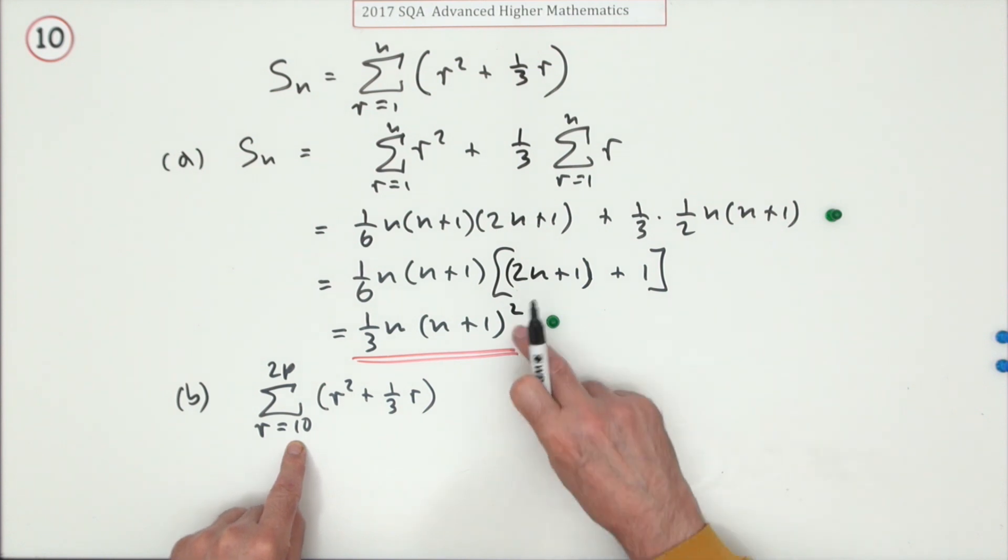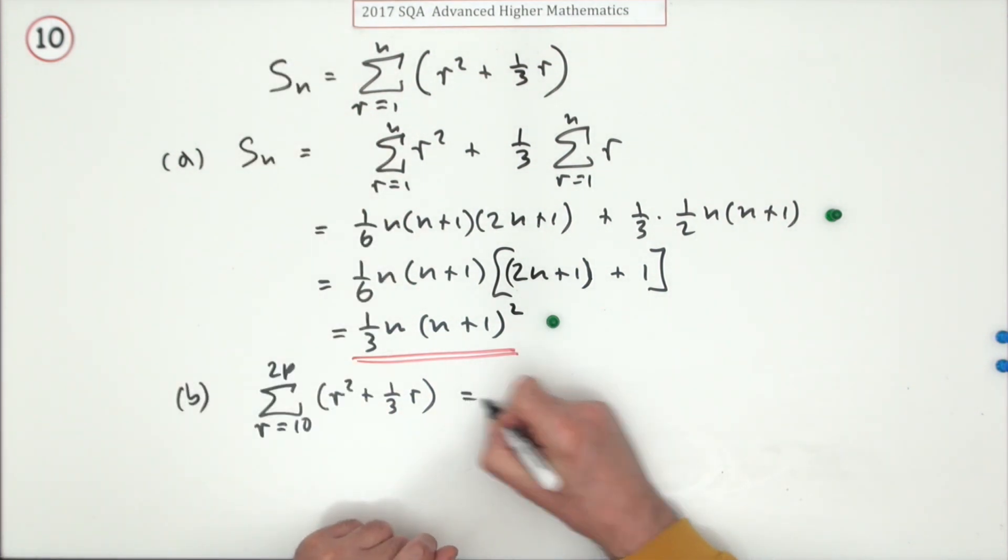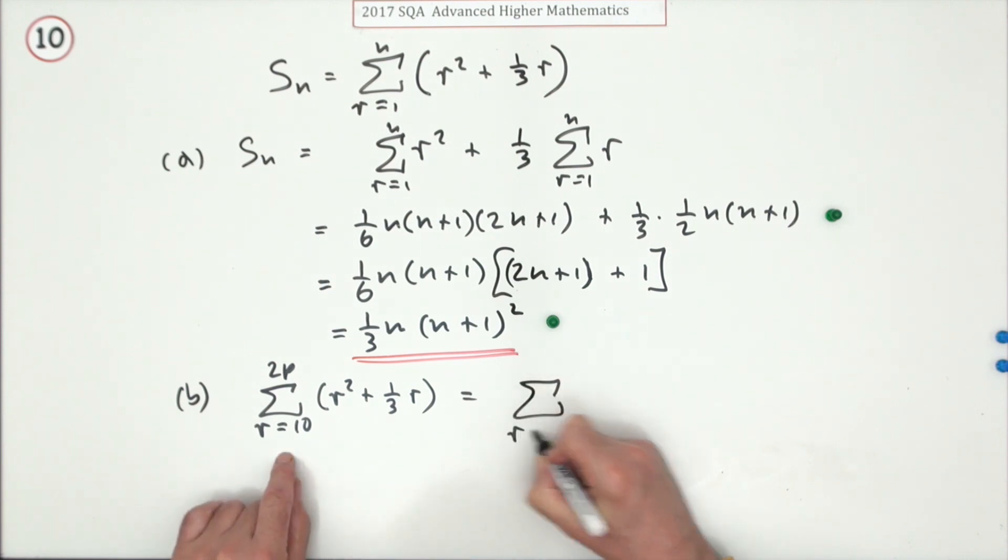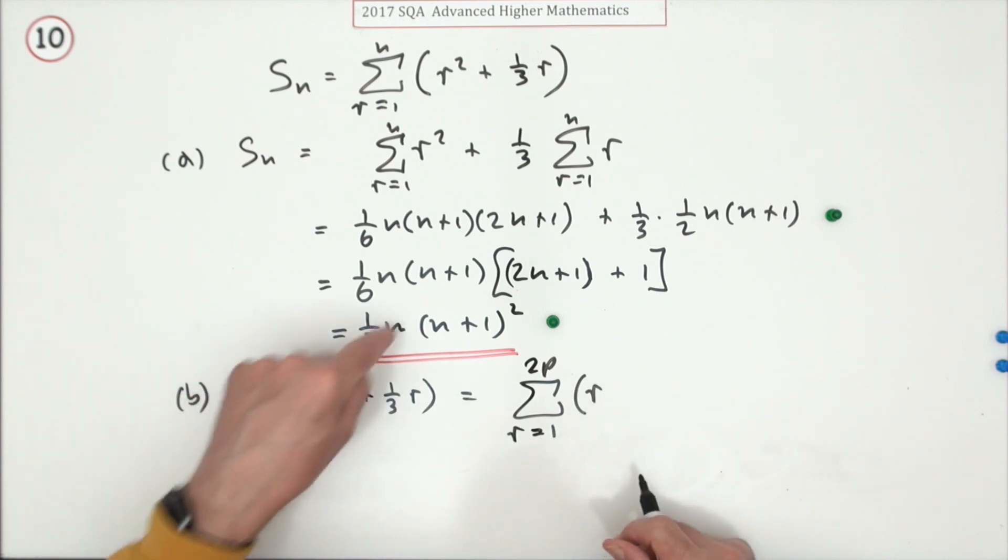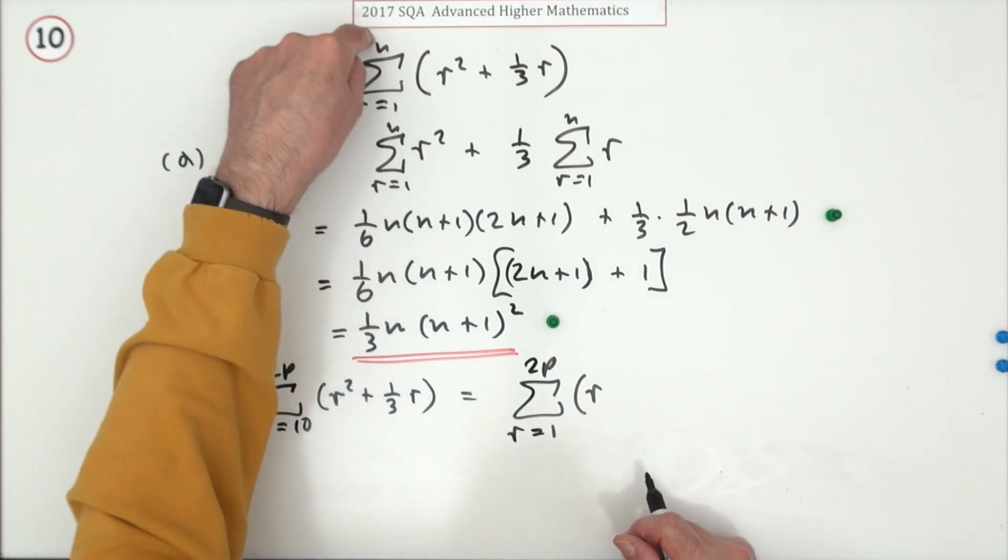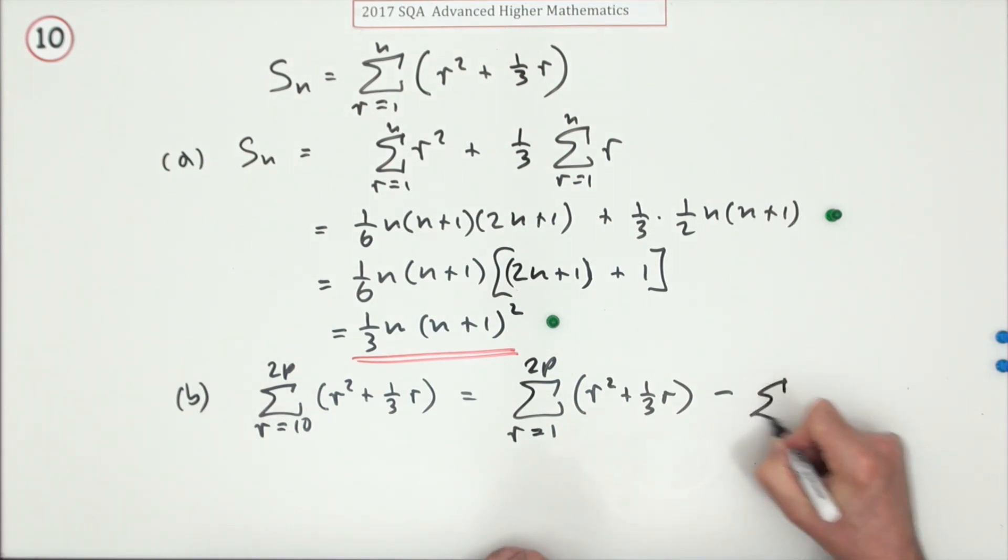And you only know the formula - this is the result if you start at one and go to anywhere. So I'll just have to do that. So if I was to go from one to this 2p thing, I could get that formula. That just means replacing this n, which is wherever it stops, with a 2p. But I don't want to start at one, I want to start at 10. So I need to get rid of the first nine. So subtract the summation from r equals one to nine. Then that'll do it.